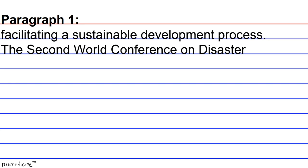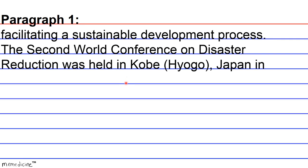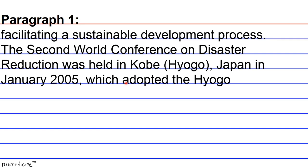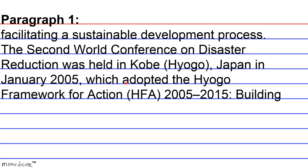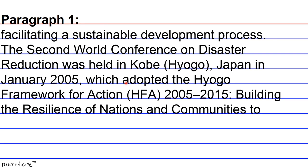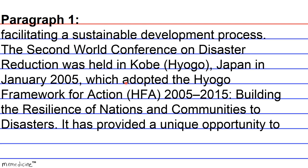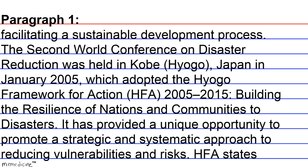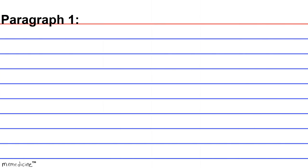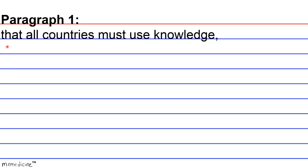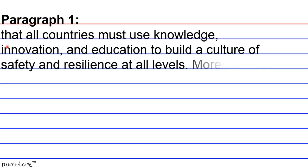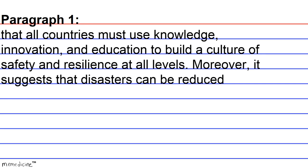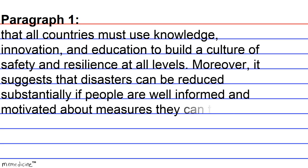The Second World Conference on Disaster Reduction held in Kobe, Hyogo, Japan in January 2005 adopted the Hyogo Framework of Action (HFA) 2005-2015, building the resilience of nations and communities to disasters. It has provided a unique opportunity to promote a strategic and systematic approach to reducing vulnerabilities and risks. HFA states that all countries must use knowledge, innovation, and education to build a culture of safety and resilience at all levels. Moreover, it suggests that disasters can be reduced substantially if people are well informed and motivated about measures they can take to reduce vulnerability.